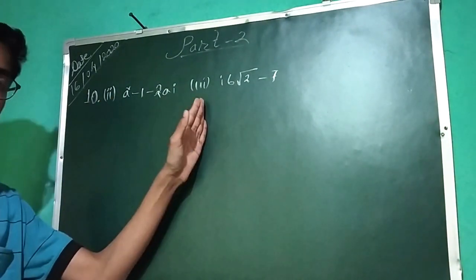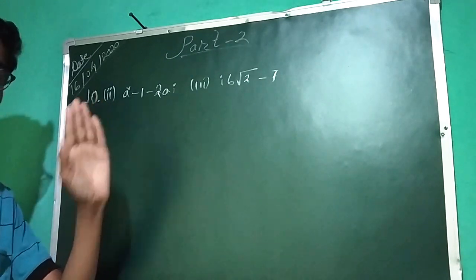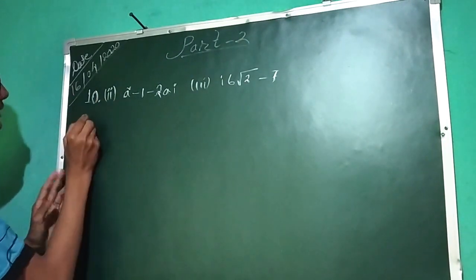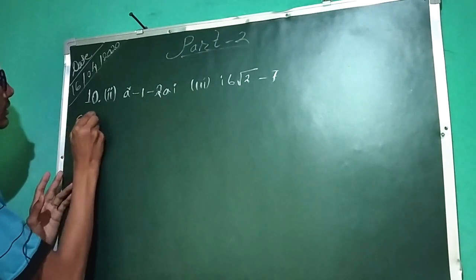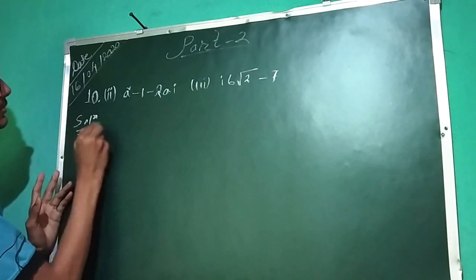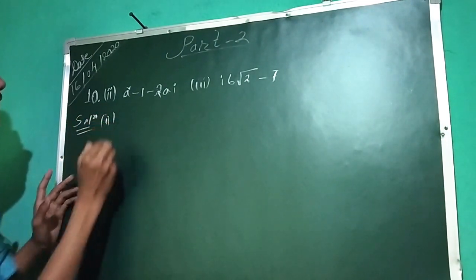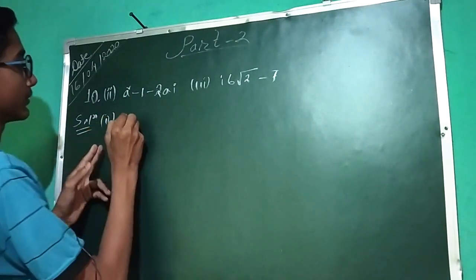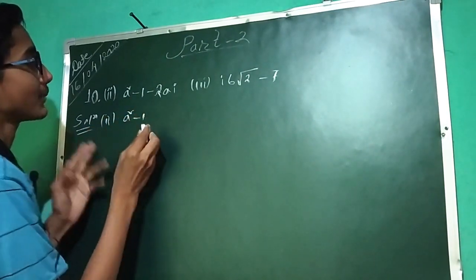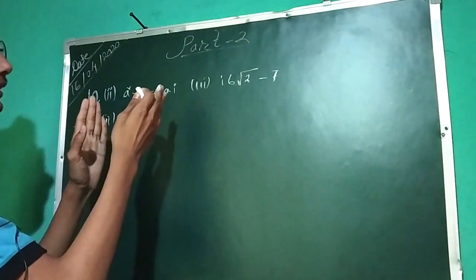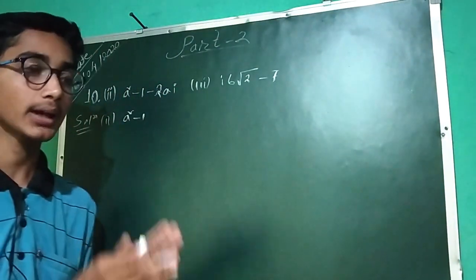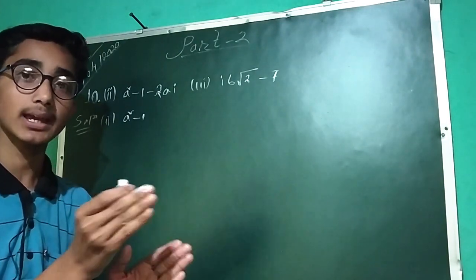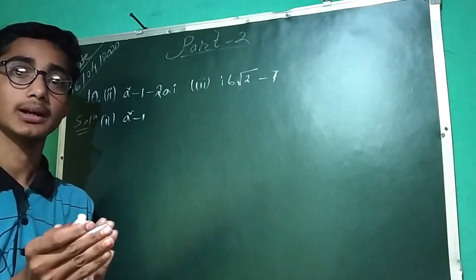So, we have to show the same thing. We know the formula: a minus b whole square equals a squared minus twice a b plus b squared.